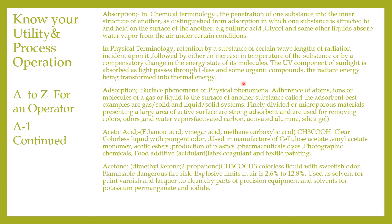The UV component of sunlight is absorbed as light passes through glass and some organic compounds, with the radiant energy being transformed into thermal energy. We might have come across radiation from UV rays through sunlight and other sources. That covers the types of absorption.